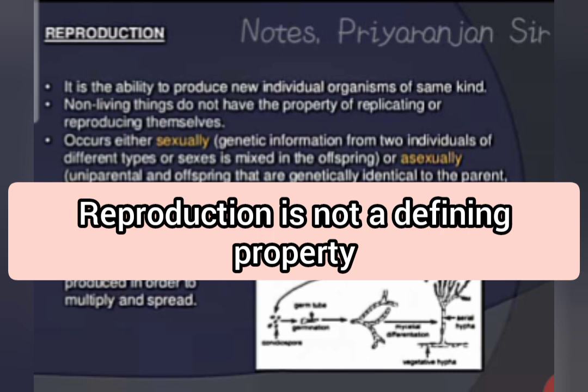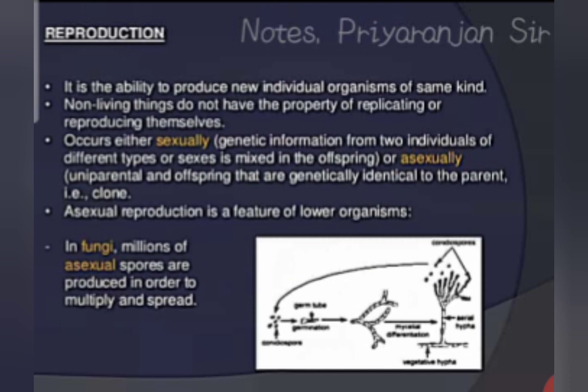So in this discussion we found that some living organisms are unable to reproduce, so reproduction is not a defining property. In the next video we are going to discuss the other features of living organisms. Thank you.